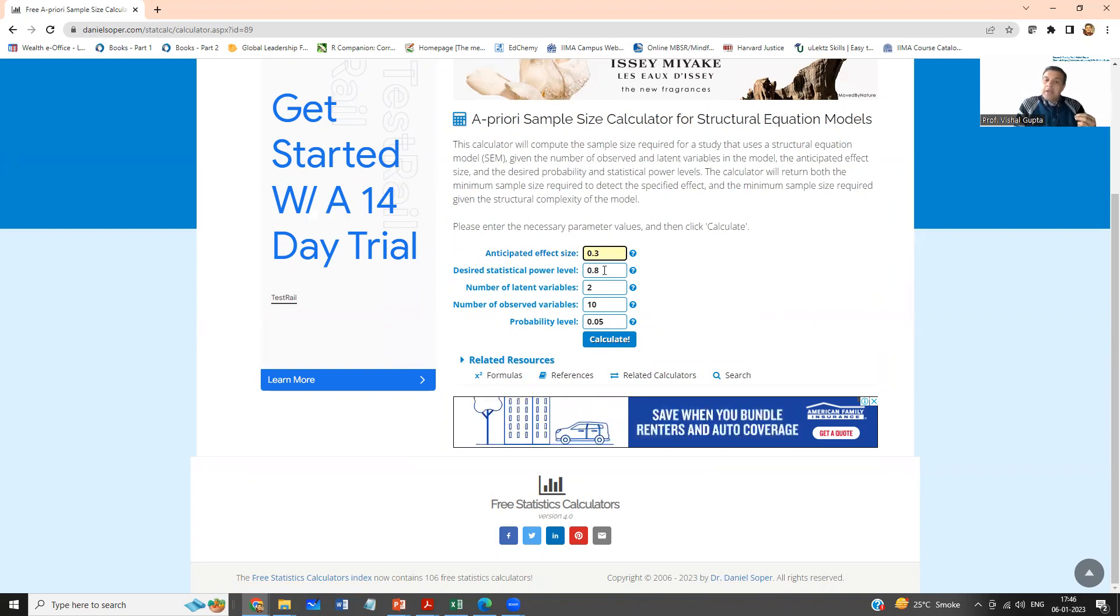Desired statistical level or power level is 80%, which is a convention. Number of latent factors in my model: I had seven - four main constructs and three control constructs, control variables. The overall observed items were 29 in my model. The alpha, the significance level, is 0.05.